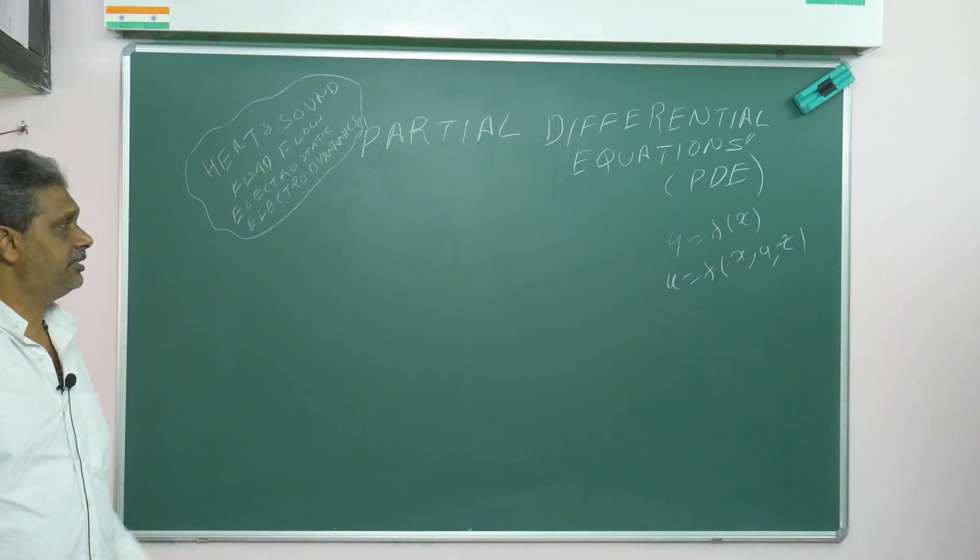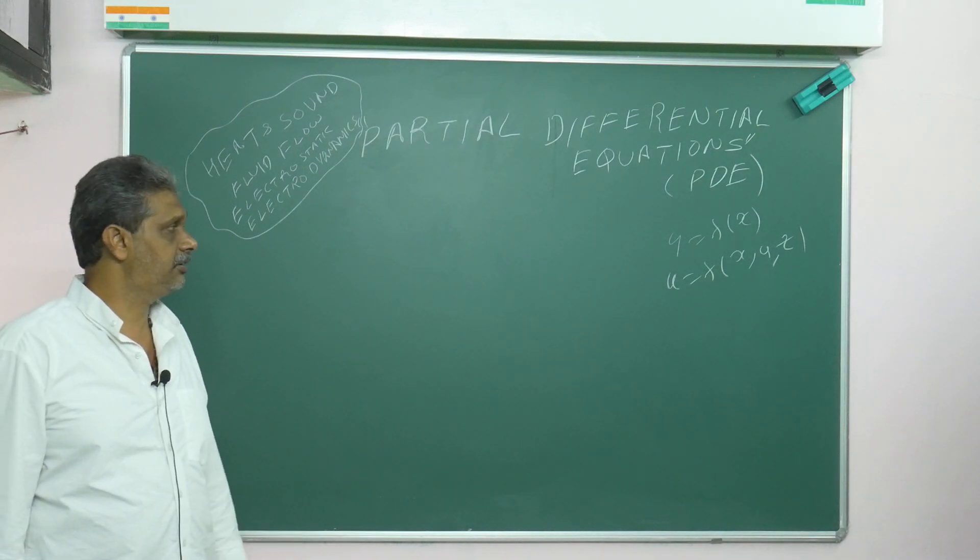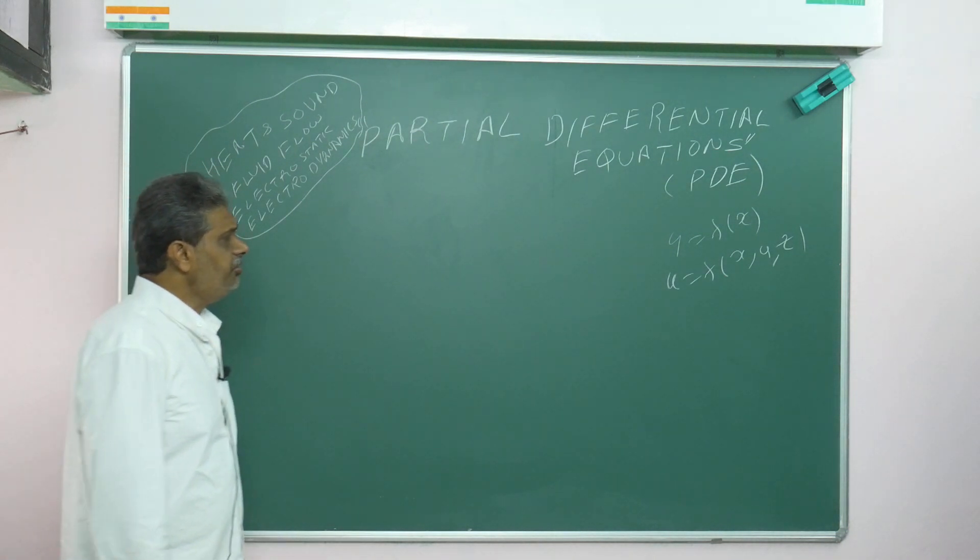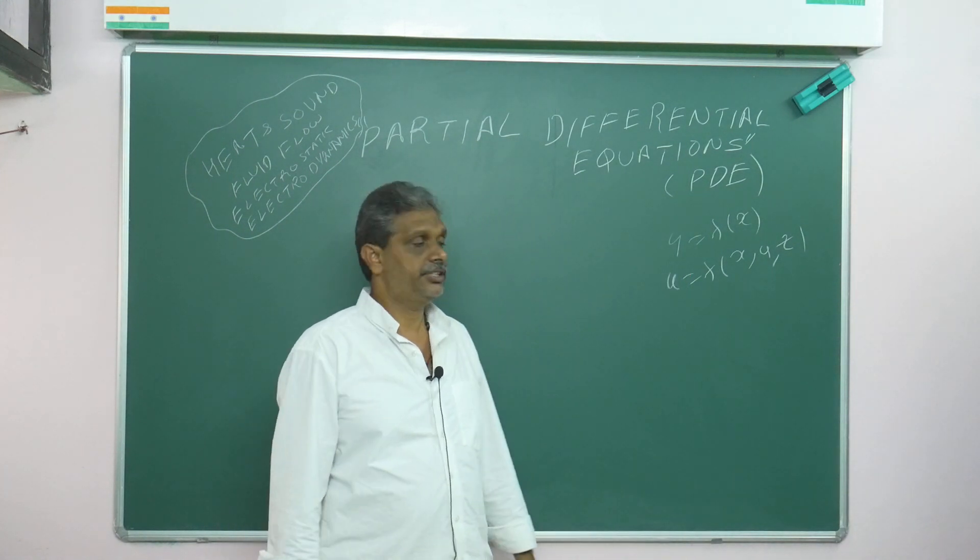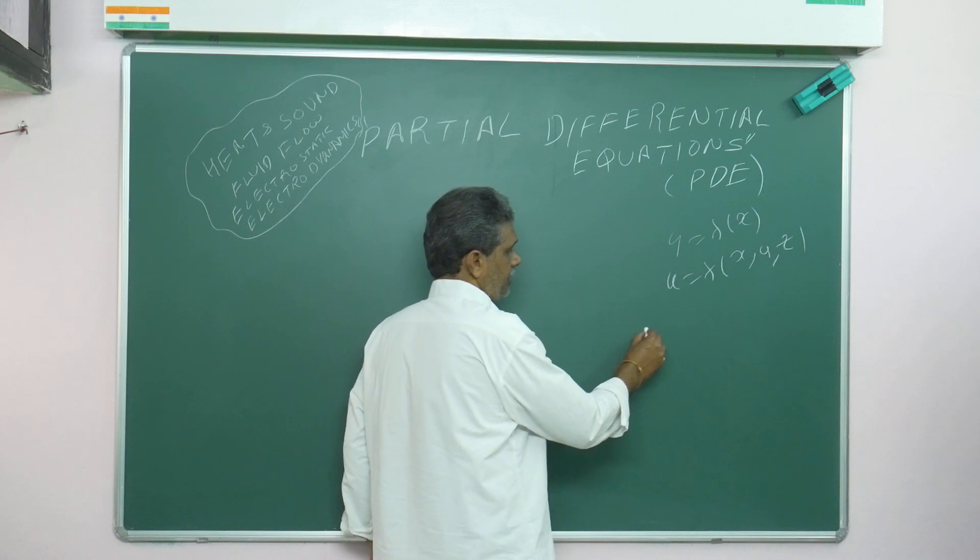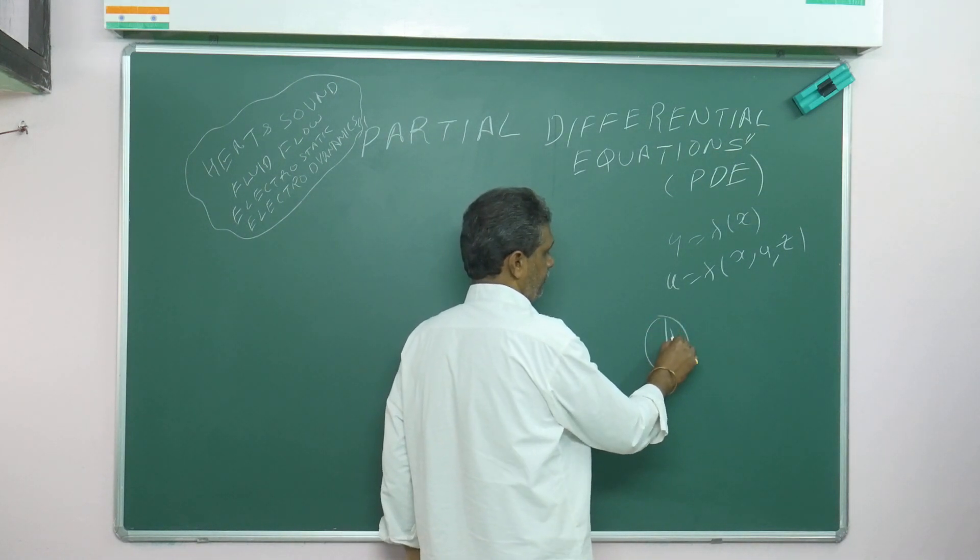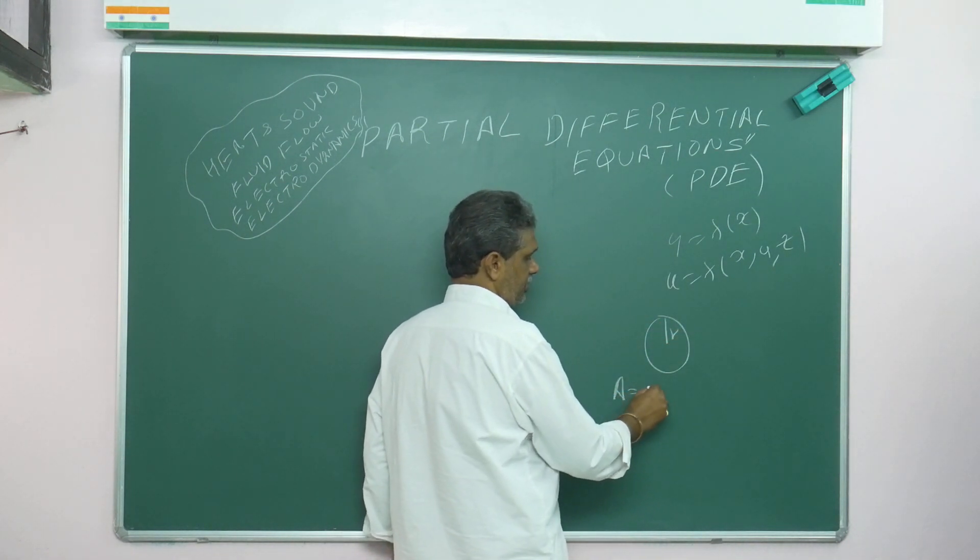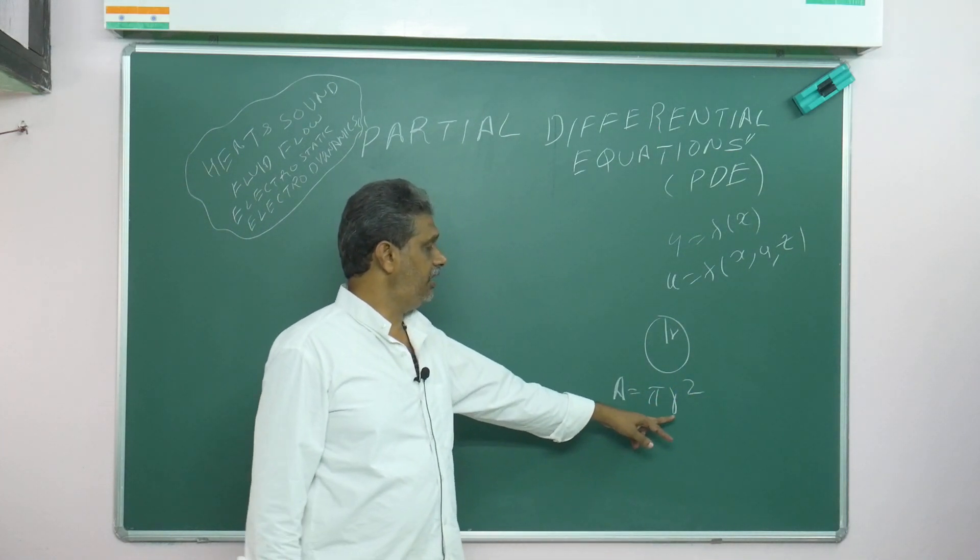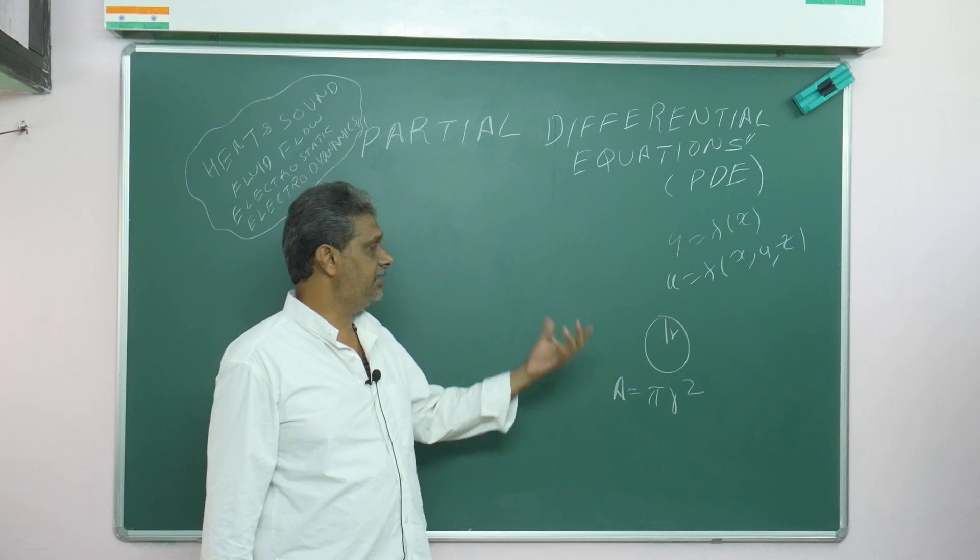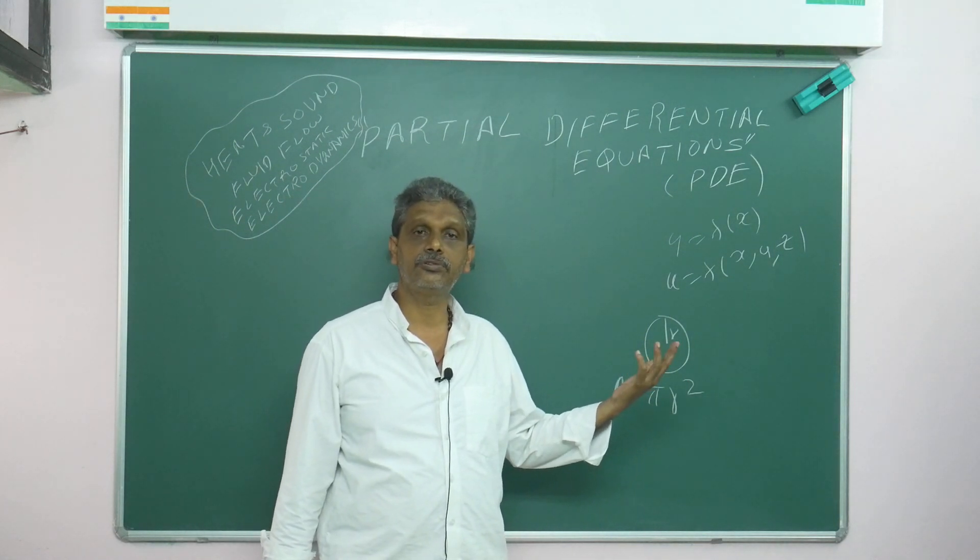Before going further, let's recall some preliminary concepts. When entering partial differentiation versus ordinary differentiation, suppose you take a circle. The area is A equals pi r squared. If r increases, area will automatically increase—no doubt.